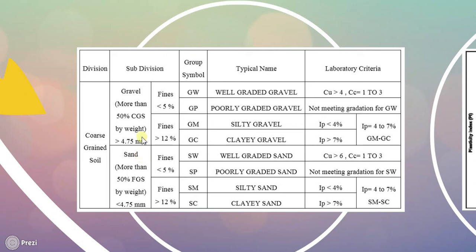Within sand, if fines are less than 5%, they are well graded (SW) or poorly graded (SP). Their laboratory criteria: Cu (uniformity coefficient) greater than 6 and Cc (coefficient of curvature) between 1 to 3 for well graded. For gravels with less than 5% fines they are GW and GP. If fines are greater than 12%, they are silty gravel (GM) or clay gravel (GC).